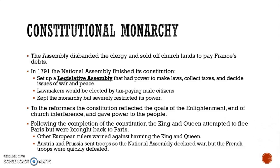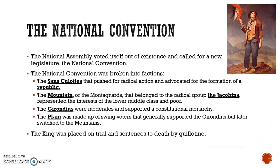Following the completion of the constitution, the king and queen attempted to flee from Paris but were brought back. Other European rulers warned against harming the king and queen, worried that if France moved to a constitutional monarchy, they might be forced to give up their own power. Austria and Prussia sent troops, and the National Assembly declared war against them, but French troops were quickly defeated. The National Assembly voted itself out of existence and called for a new legislature called the National Convention.